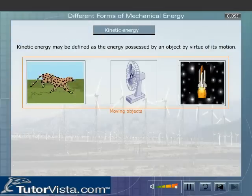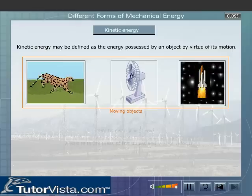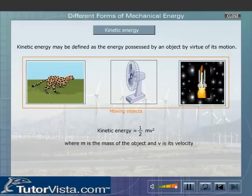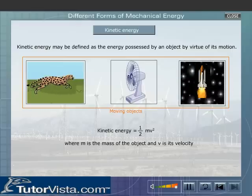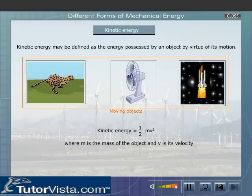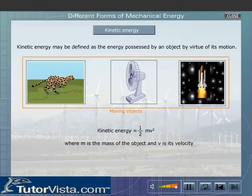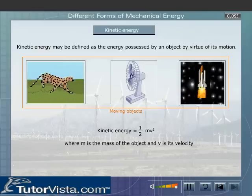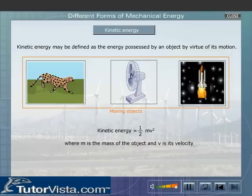The formula for calculating Kinetic Energy is: Kinetic Energy equals half mv squared. Kinetic Energy and Potential Energy, the two forms of Mechanical Energy, can be converted from one form to another.